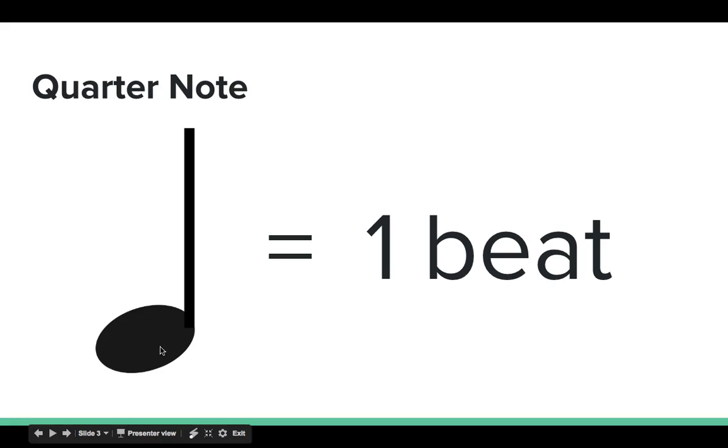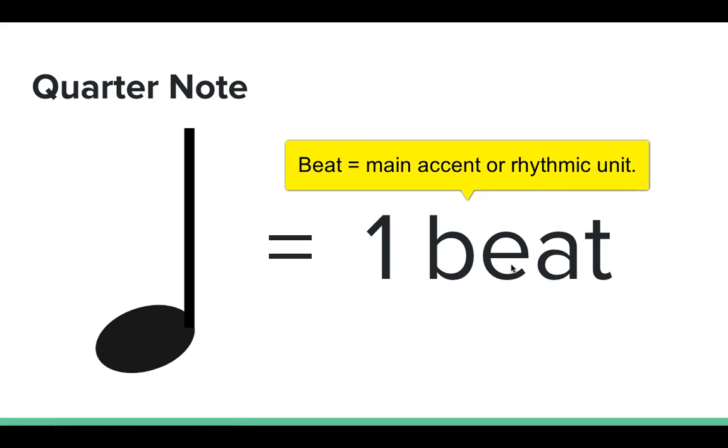It's important to recognize how it looks—it's colored in, it's solid, and it receives one beat. Now a beat is basically the main accent or rhythmic unit. So depending on my tempo, the speed of the music, a quarter note would be played on each one of these accents that I'm snapping.